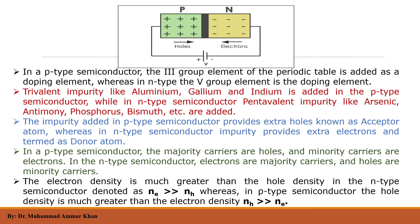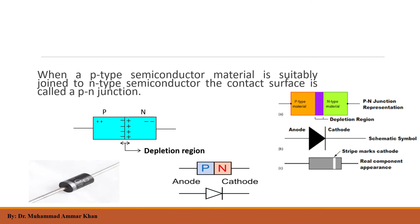In this block diagram of a P-N junction, the plus sign represents holes and the minus sign represents electrons. The anode is the hole side and the cathode is the electron side. When P-type semiconductor material is suitably joined to N-type semiconductor, the contact surface is called the P-N junction.